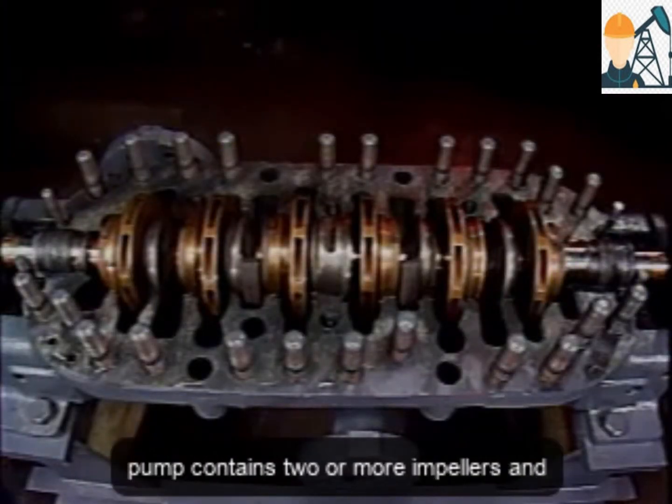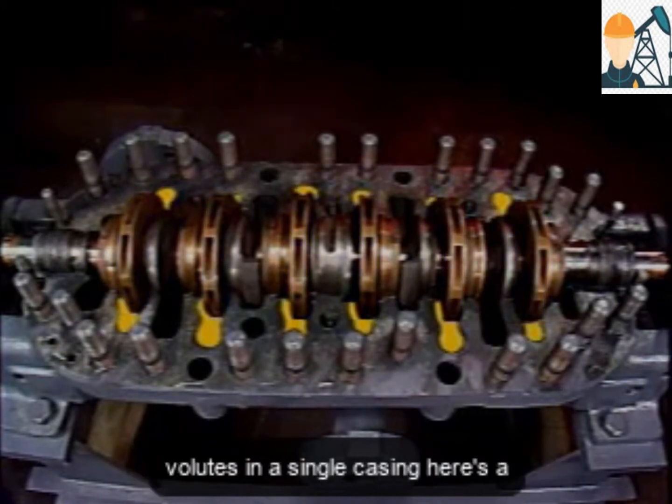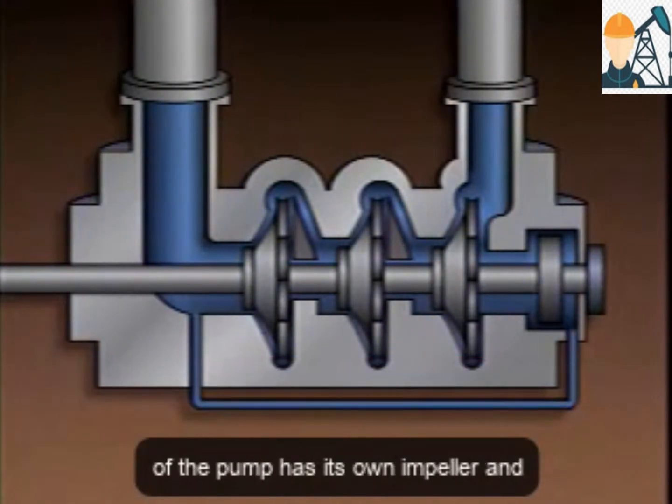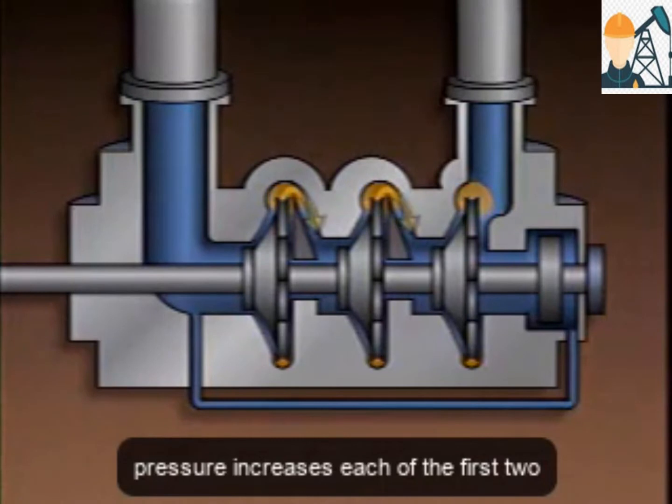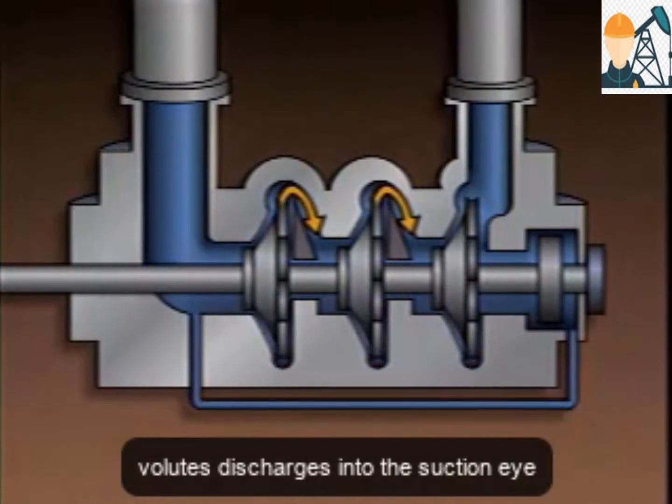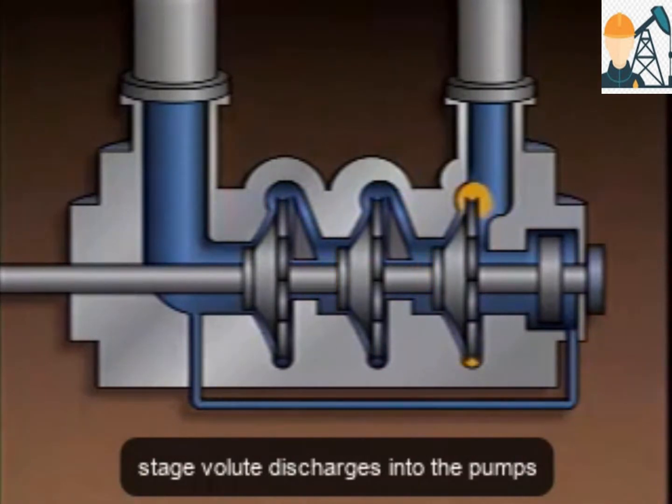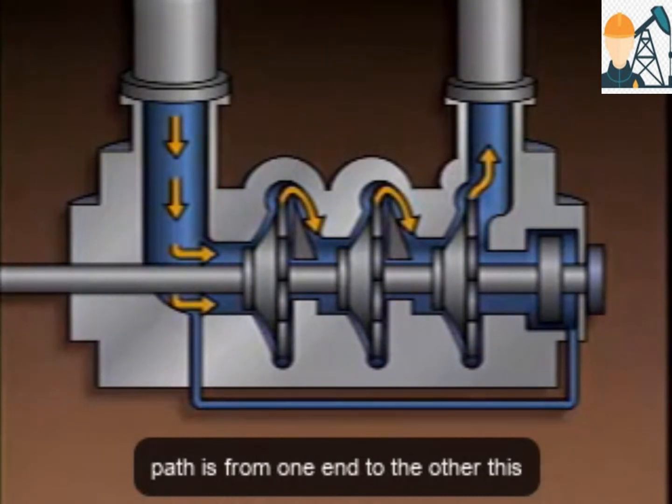A multi-stage centrifugal pump contains two or more impellers and volutes in a single casing. Here's a simplified cross-section of a three-stage centrifugal pump. Each stage of the pump has its own impeller and volute. In the volute, the liquid's pressure increases. Each of the first two volutes discharges into the suction eye of the stage that follows it. The third stage volute discharges into the pump's outlet. So, in this pump, the liquid flow path is from one end to the other.